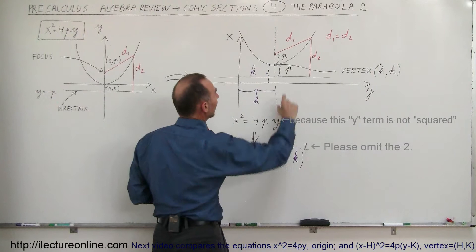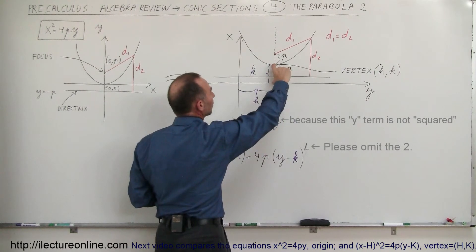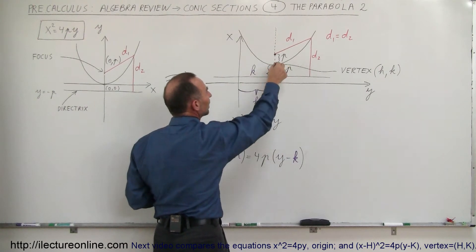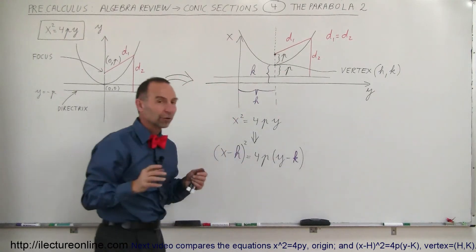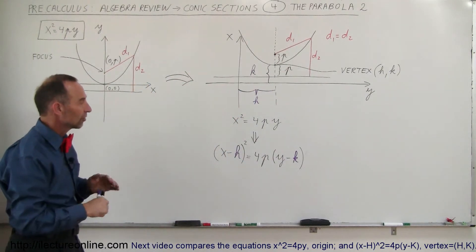And if y is equal to k, y minus k is zero. So again, that would be the same thing as if the parabola had the vertex at the origin. So the equation does seem to work.